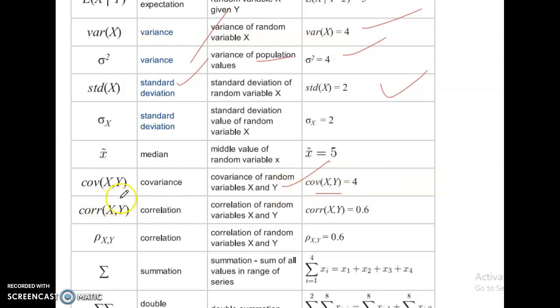Correlation of X comma Y. Correlation of random variables X and Y. Correlation X comma Y is equal to 0.3. Rho of X Y is the correlation of random variables X and Y. Rho of X Y is equal to 0.6.